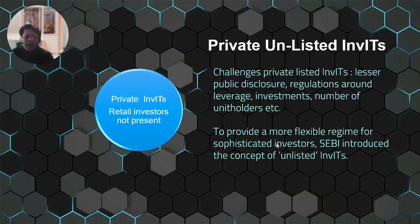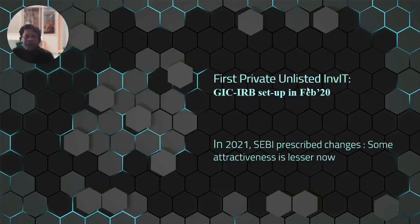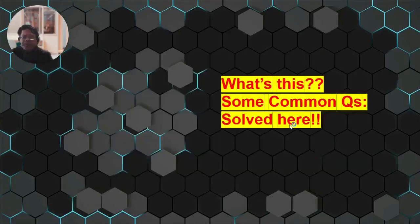The third category is private unlisted InvITs — as the name suggests, not listed on stock exchanges and not open to general retail investors. They emerged as an alternative to private listed InvITs, which had their own regulatory requirements. SEBI created this structure to allow more flexibility in investor interaction and disclosures. The first private unlisted InvIT was the GIC IRB InvIT, set up in February 2020. However, after SEBI prescribed changes in 2021, this route became less attractive as regulations became more stringent.